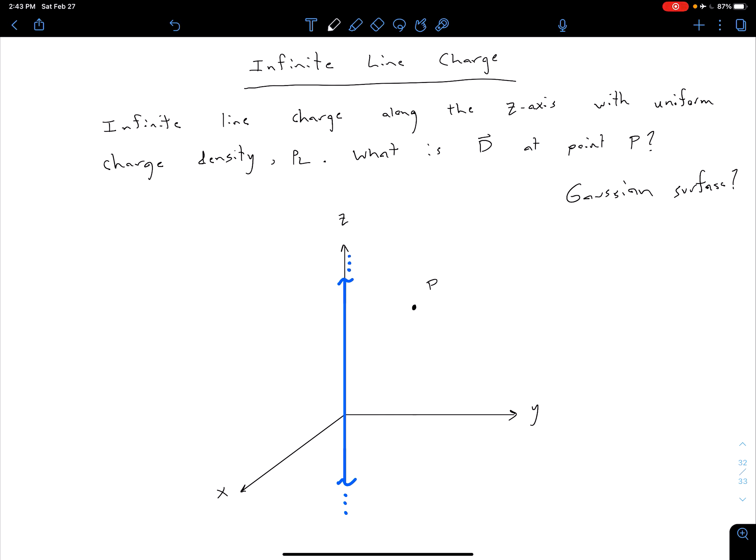So remember, we want our D to be constant on our Gaussian surface, and we also want our D to be normal or tangential. So we kind of need to know a little bit something about D. Let's think sort of qualitatively about what's going on with our electric field, and therefore our D from this infinite line charge.